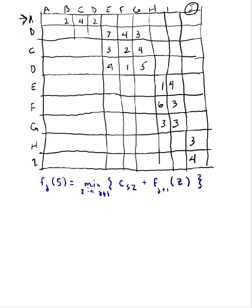This is part three, so let's go ahead and get started. I've copied down on a second piece of paper the adjacency matrix and the formula that we're using to compute the optimal path at each stage of our network as we go from the destination back to the original stage.